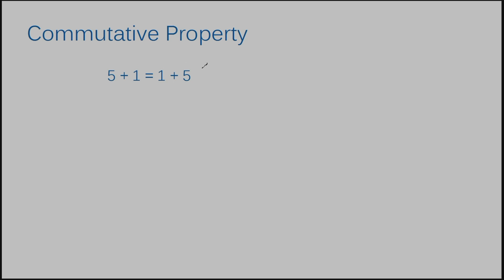Let's look at another example. Four times six — this time our example has multiplication. That is no problem; it still applies to the commutative property. We have four multiplied times six and we get six times four — the same value on both sides of the equal sign. It doesn't matter which positions you put these numbers in; you're going to get the same thing.